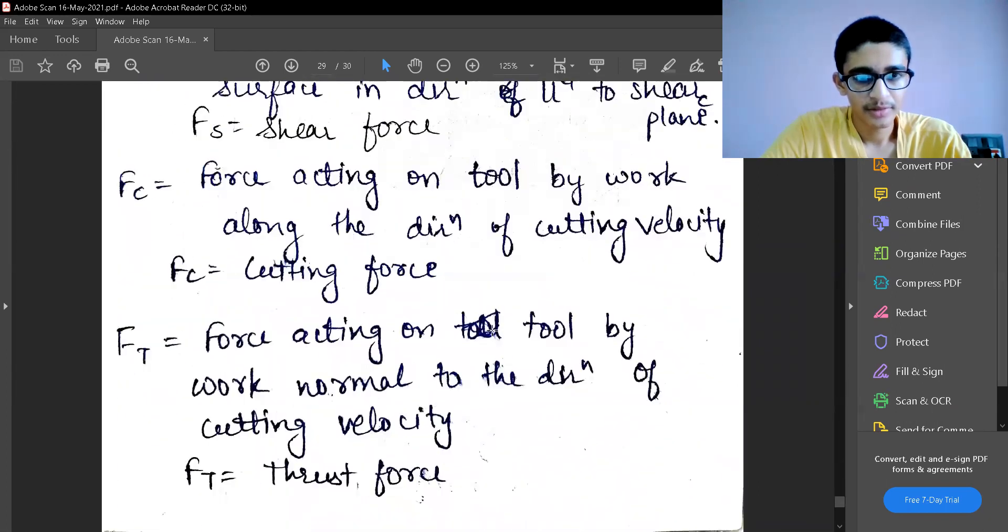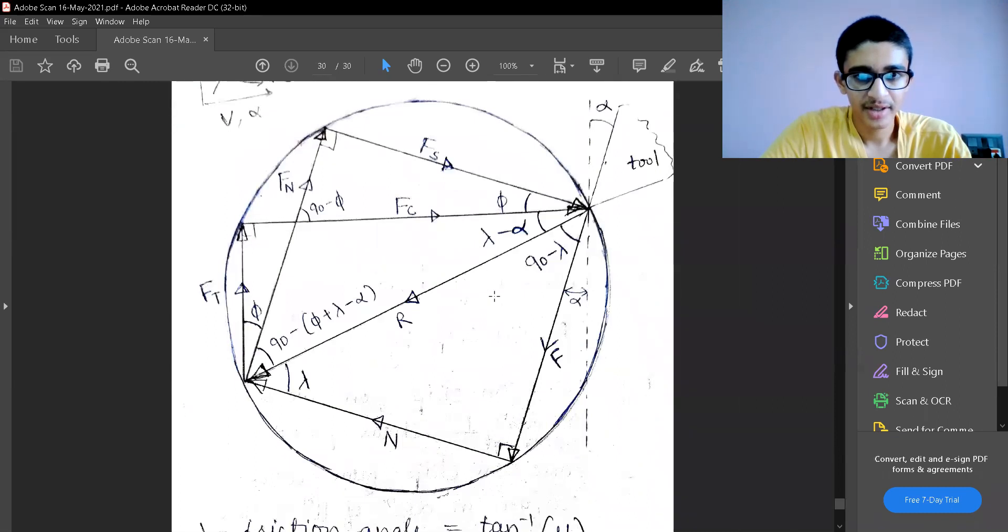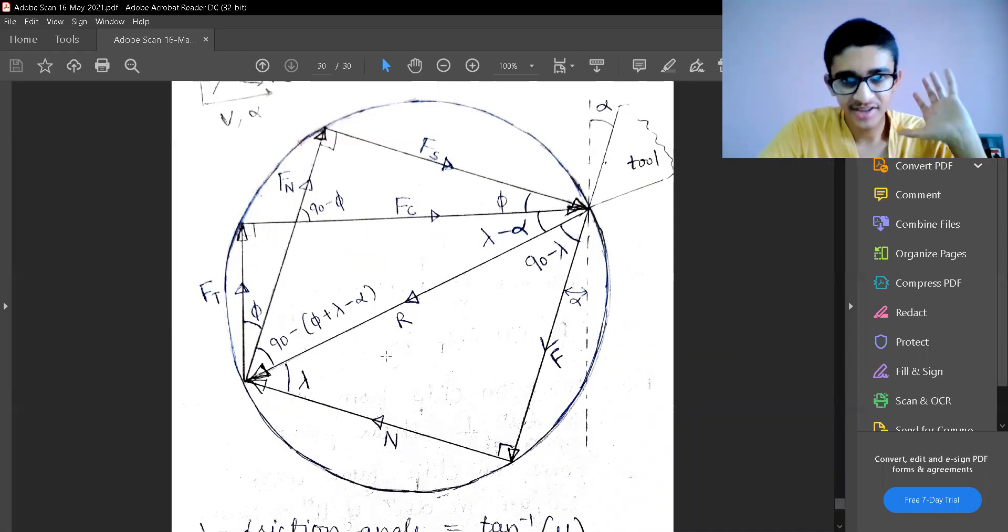Just to make more stress, I am repeatedly using this Merchant circle and these triangles which are involved, the angles which are involved to solve all the numerical questions. You need to picture this. Draw this circle two, three times on your own in rough. Write all the forces involved and all the angles involved.